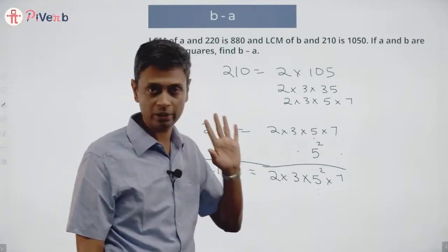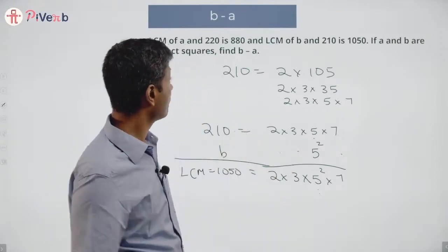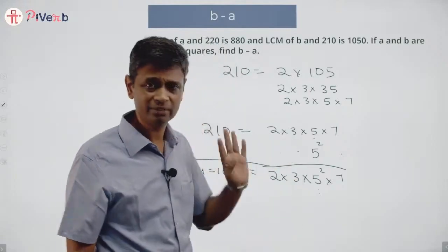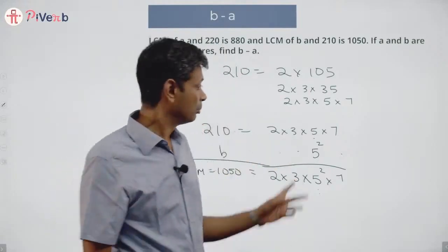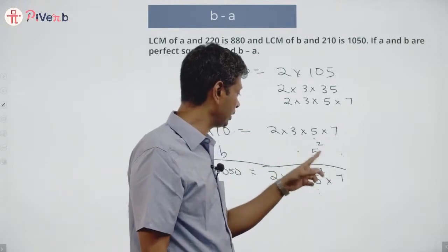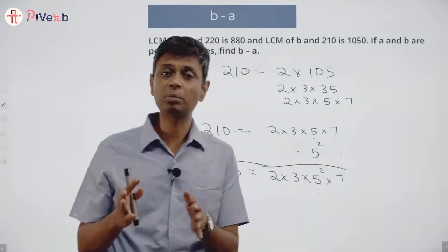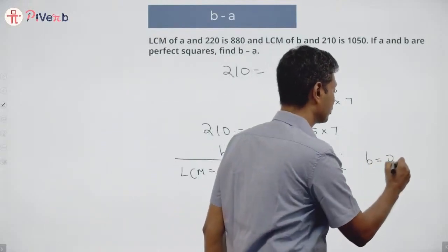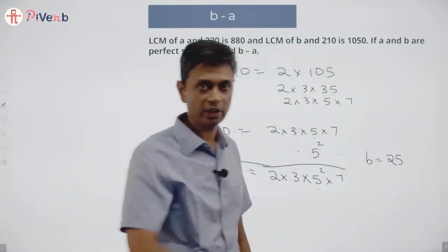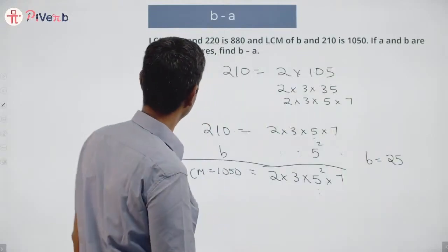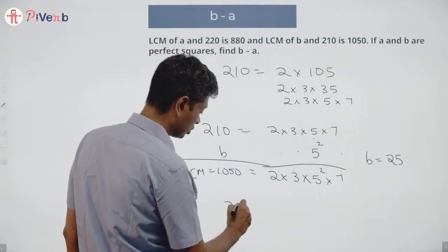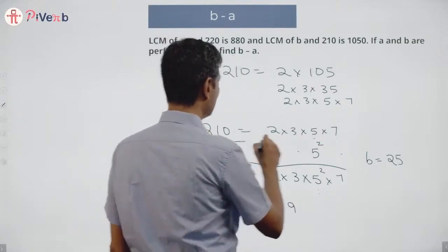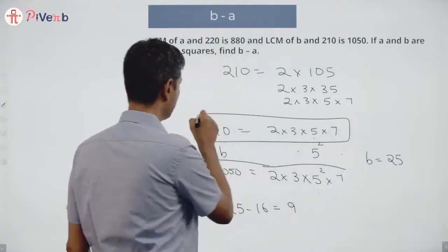We know b is also a perfect square. 5² = 25 is a perfect square. But 25 × 7, 25 × 3, 25 × 2, or 25 × 3 × 7 are none of them perfect squares. So b is just 25. Therefore b minus a = 25 − 16 = 9.